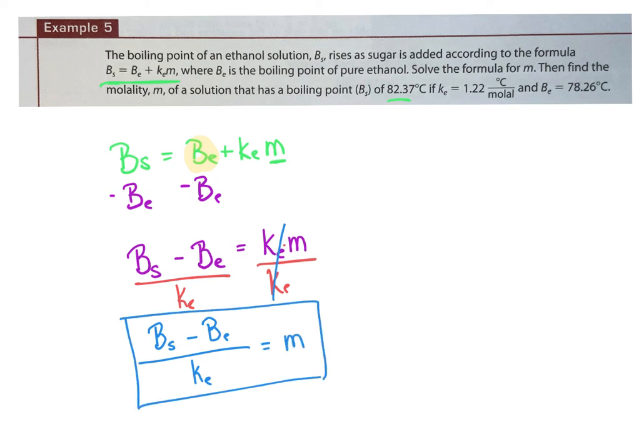They're going to use a bunch of big words, but that was a simple literal equation — much simpler than example four. So just because you have a word problem, pay attention to the formula they give you and what they want you to solve for. Don't be thrown off by the scientific terms. Get to the basics: what am I trying to do? I'm trying to solve for M. It's a really simple equation — subtract and divide is all I had to do.